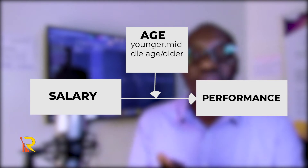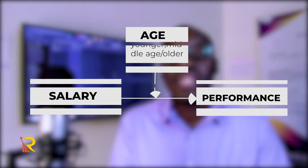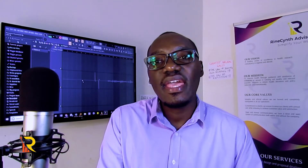An 18-year-old given one million will have a different performance level compared to a 30- or 40-year-old receiving the same amount, because age is associated with different responsibilities. An 18-year-old may not have rent and family responsibilities that a 40-year-old has. So age, in that sense, is a moderating variable.